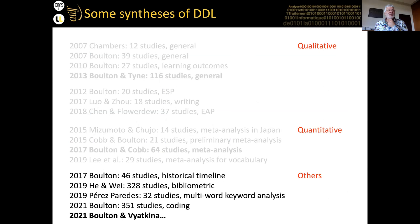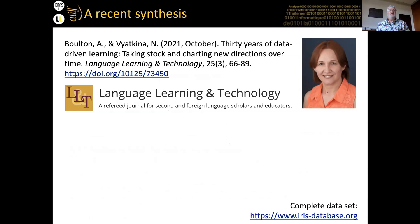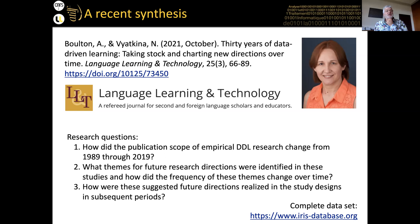A third type of synthesis is with Nina Vyatkina — a paper that came out in October in Language Learning and Technology, free online, with the complete dataset available via IRIS. We had three research questions: first, how has the publication scope changed over time across a 30-year period? Second, what future research directions were identified — we looked at conclusion sections to see what people identified as limitations and recommendations. Third, were those recommendations followed up in future papers?